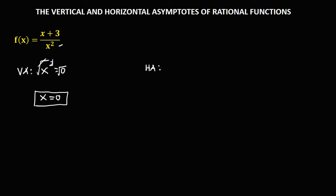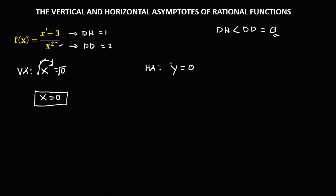To solve for the horizontal asymptote, we check the degree of the numerator and the degree of the denominator. The degree of the numerator is equal to 1, and the degree of the denominator is equal to 2. Since the degree of the numerator is less than the degree of the denominator, the horizontal asymptote is equal to 0. Therefore, y is equal to 0.